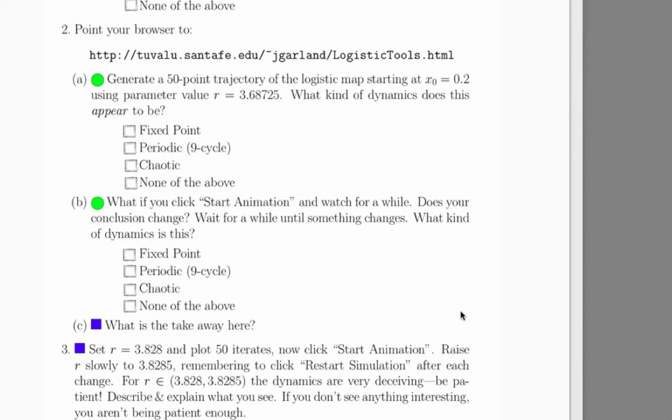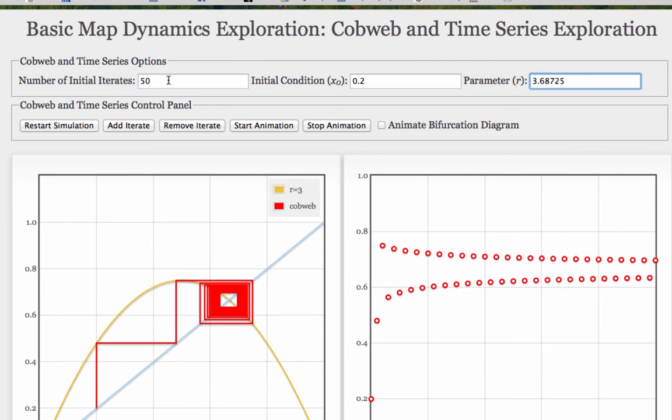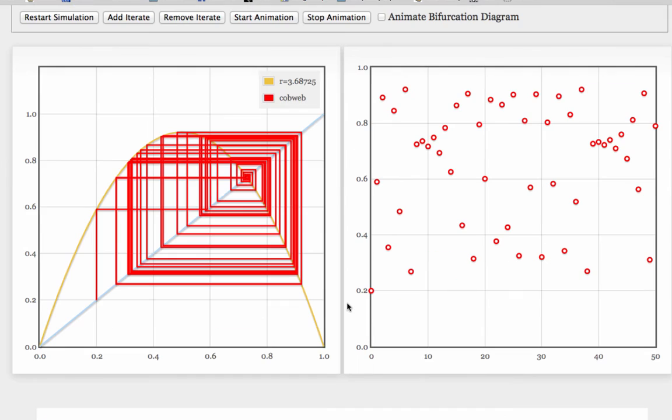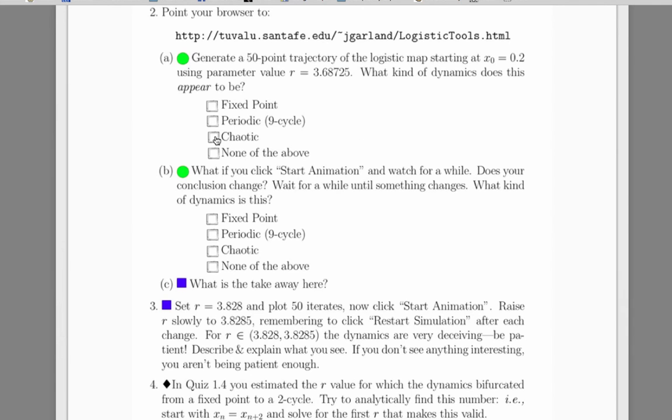In problem 2, we went back to using the app. The task was to generate a 50 point trajectory from x0 equals 0.2 using this very carefully chosen r parameter value. Let's restart the simulation. This doesn't look to me like anything periodic or anything that's a fixed point. I would guess this is chaotic, but there's something very interesting going on here. Look at this little piece and then this little piece. There's some patterns going on there, but they're not quite the same. So I would guess that this is a chaotic orbit.